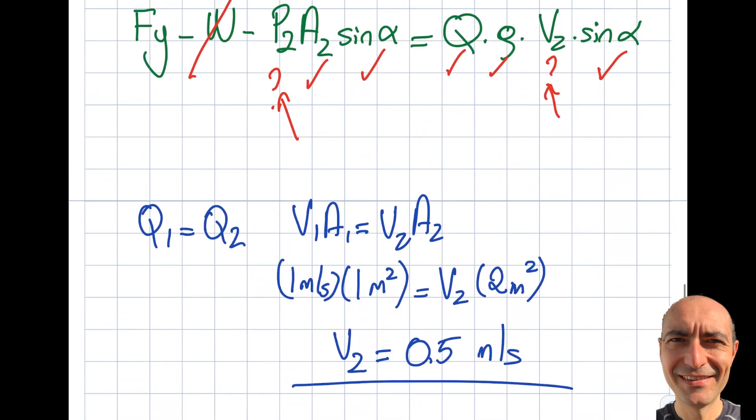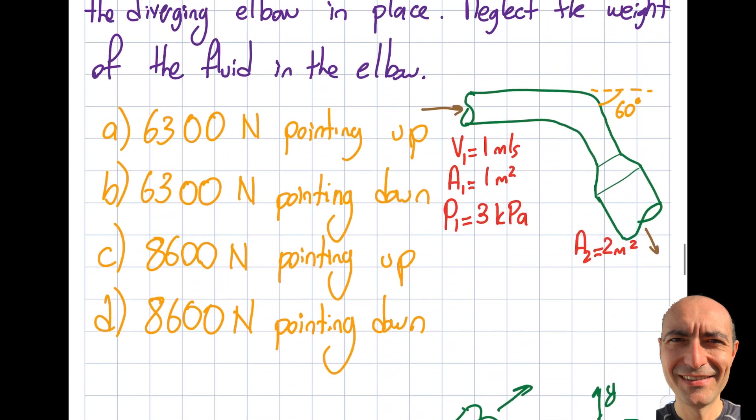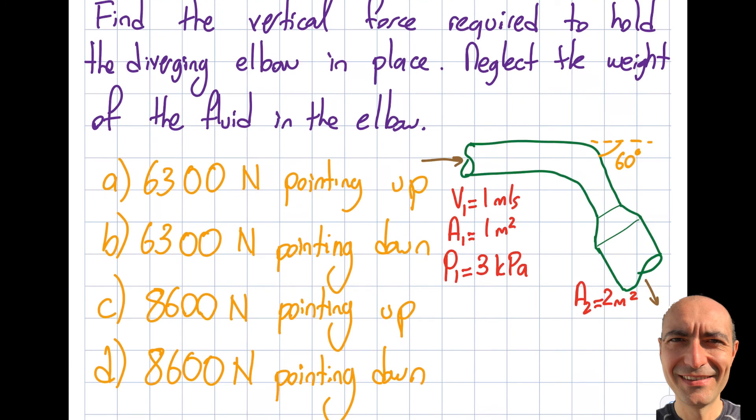Now let's write Bernoulli's equation: p1/ρ + v1²/2 + gz1 = p2/ρ + v2²/2 + gz2.